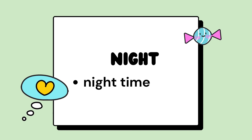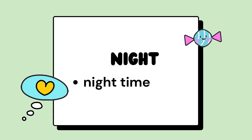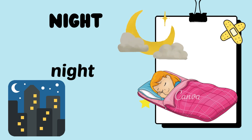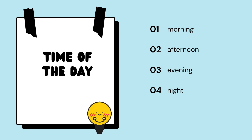Night. Say with me again: night. Well done! Now we can conclude: in a day, we have morning, afternoon, evening, and night. Say with me again: we have morning, afternoon, evening, and night — for a day.